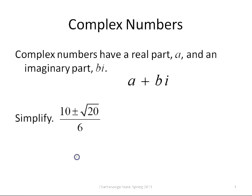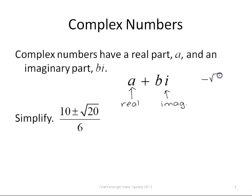Now that we have looked at purely imaginary numbers, let's look at complex numbers. Complex numbers really have two terms: the first term is the real part, and the second term is the imaginary part, which has the i in it. So complex numbers have the form a plus bi. Even the numbers we were just working with — like negative square root of 2 times i — is a complex number; it just happens that the real part is 0, so we don't write that.